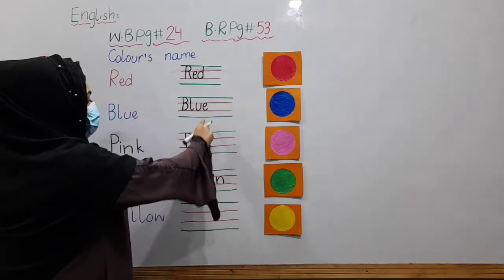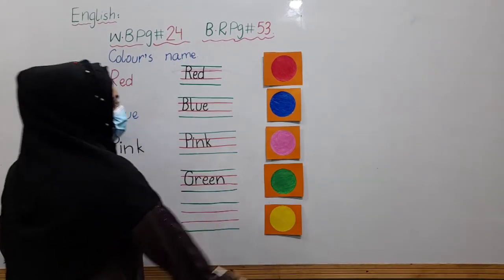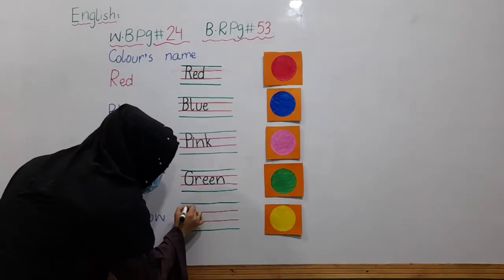Green. Red, blue, pink, green, yellow. Now, we will spell it, yellow.